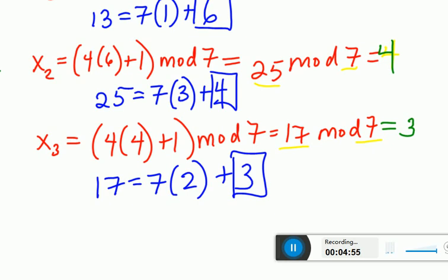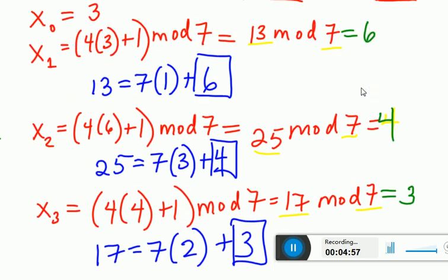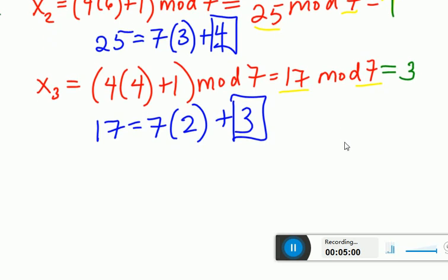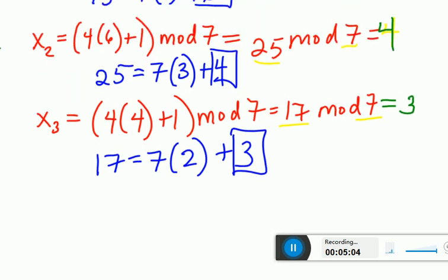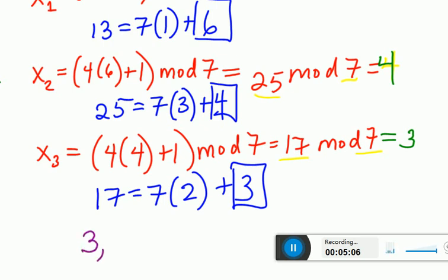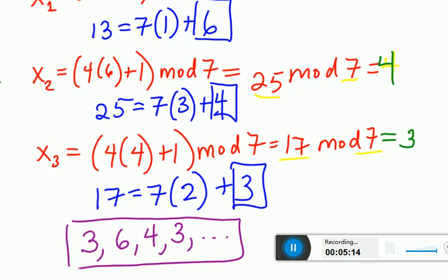Now I'm going to write out my list of pseudorandom numbers. I start with 3 as my seed, I got 6, I got 4, and I went back to 3. That's going to go on forever in that pattern: 3, 6, 4, 3, 6, 4...